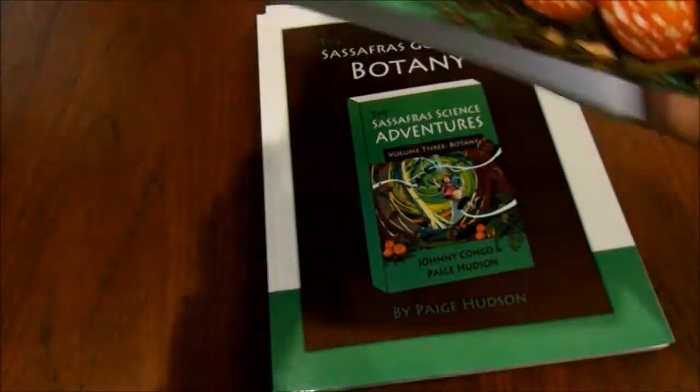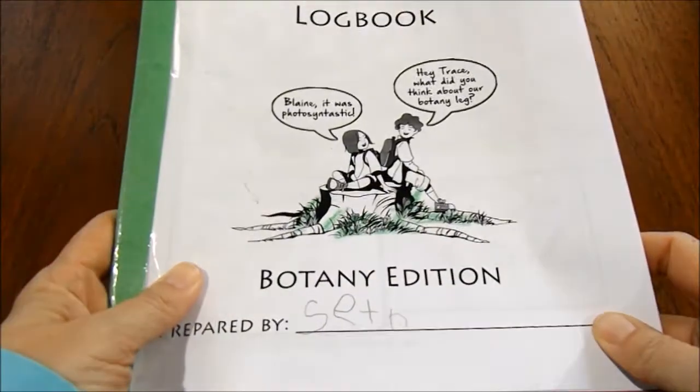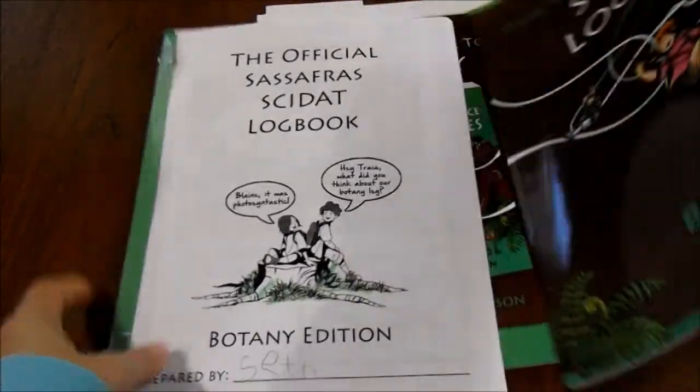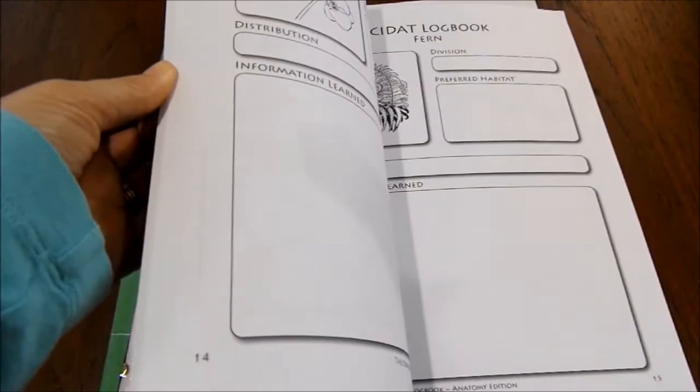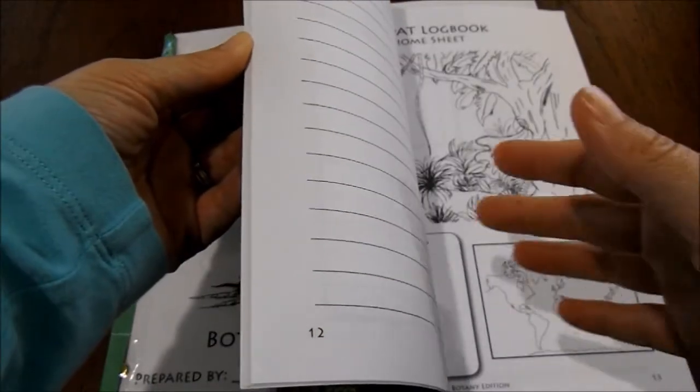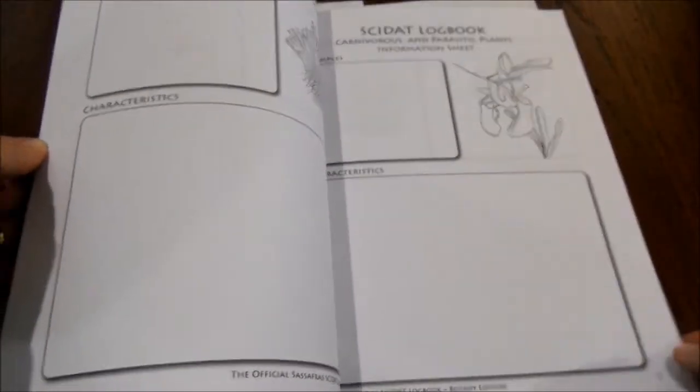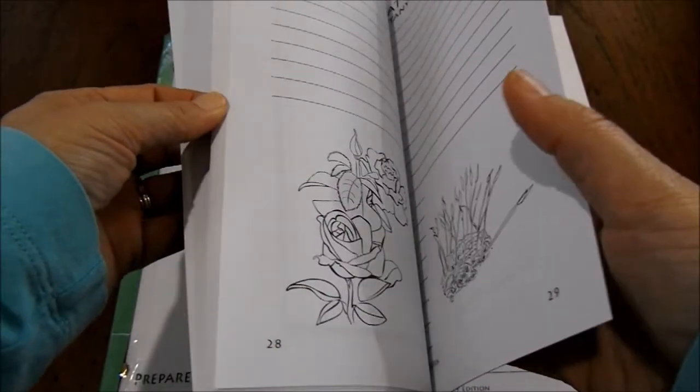So the logbook - I opted to actually print out my own logbook because there are some pages in here that we didn't use because our son is only in second grade and he's not writing as much. So we don't use the note pages and we did not use these information sheets or the project record pages which look like this.